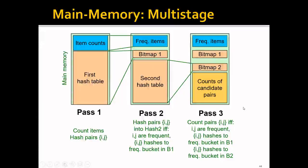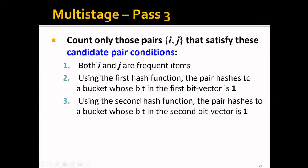To write it down more clearly, we count only those pairs that satisfy three conditions. The first condition is that both i and j are frequent items. The second is that if we use the first hash function and hash this pair ij, it hashes to a bit that is one. The third condition is that if we use the second hash function and hash this pair, it also hashes to a bit one. Only if the pair satisfies all three conditions will we count this pair.